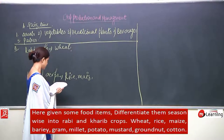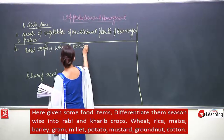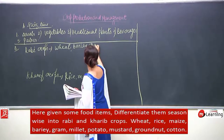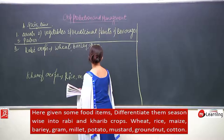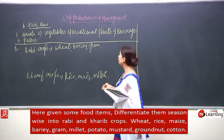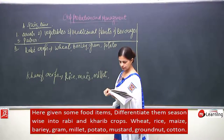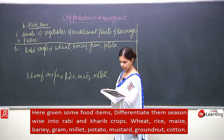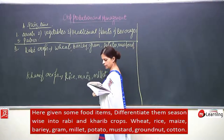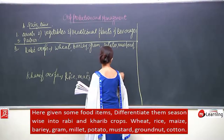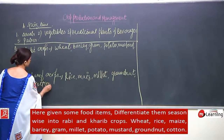Barley is a Rabi crop. Gram, which we just studied, is also a Rabi crop. Millet is a Kharif crop. Potato is Rabi. Mustard is a Rabi crop. Groundnut and cotton are both monsoon crops.